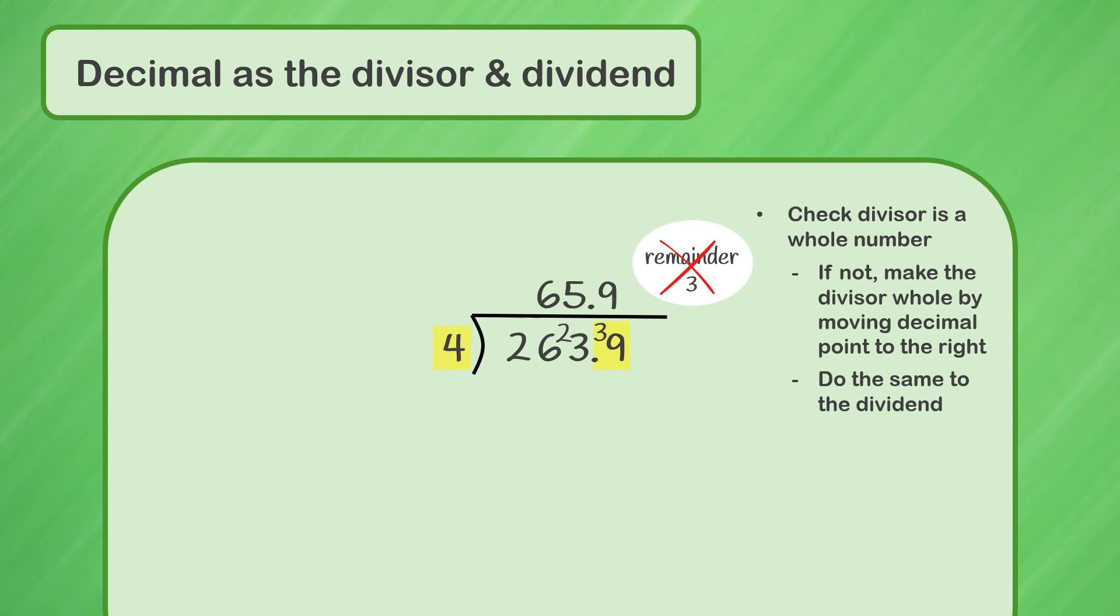We won't leave this 3 as a remainder. Because we're working with a decimal, we can add a 0 to the end of our dividend, without changing the value. So instead of writing remainder 3, we can put the 3 in front of the 0, so it becomes 30. How many times does 4 fit into 30? 7 times. With 2 left over.